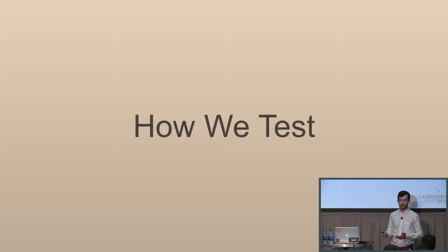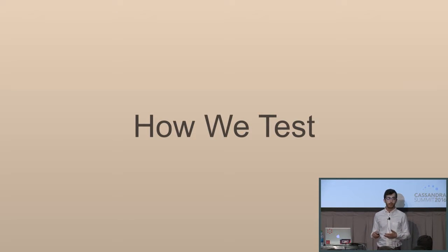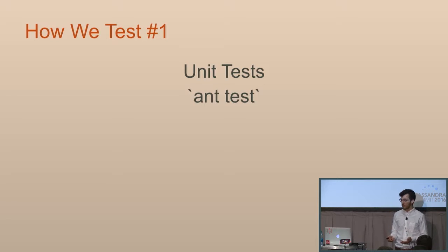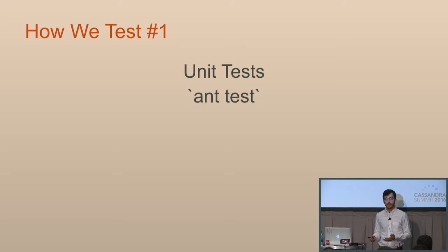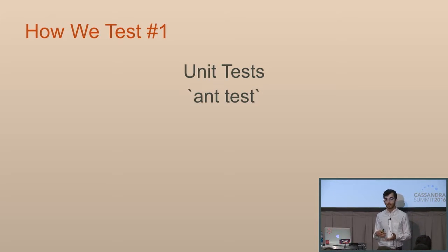How does the open source Apache Cassandra project currently test? There are two main test suites we use to ensure its quality. One is our unit tests — these live in the Apache Cassandra source tree. When you check out Apache Cassandra, just run ant test. We have about a thousand JUnit tests that, like any good unit test, test small isolated modules of the code to ensure their functionality.